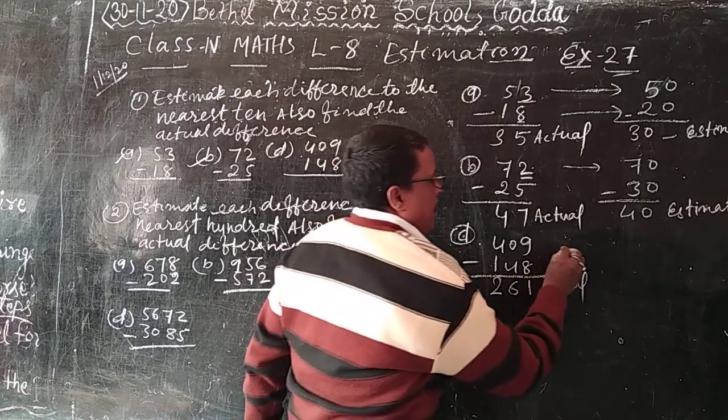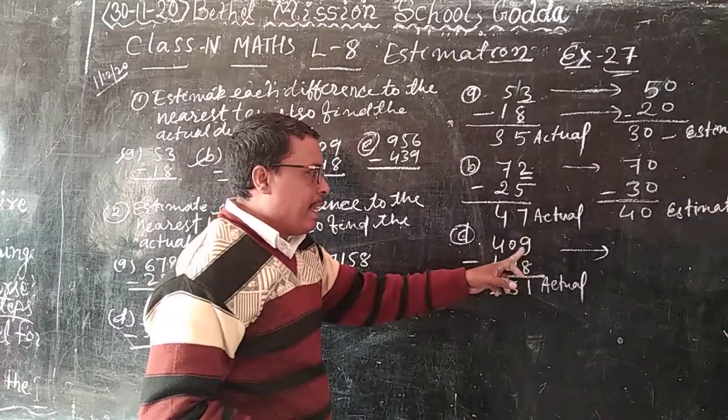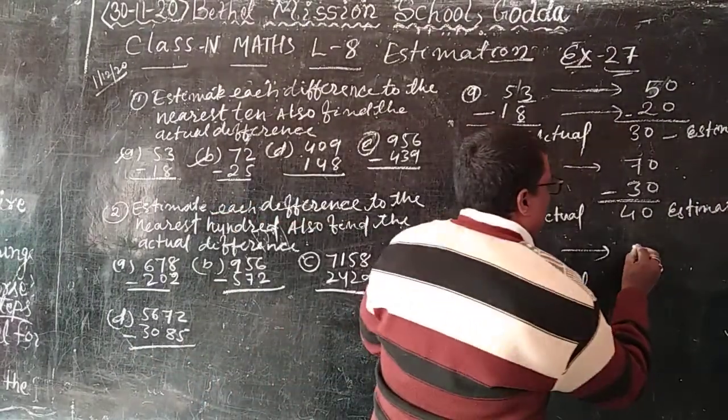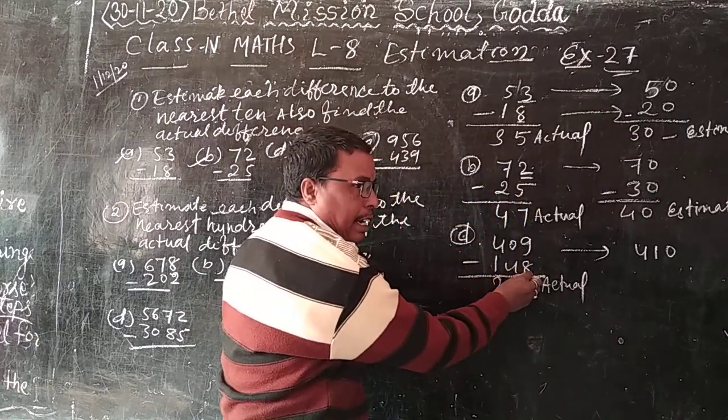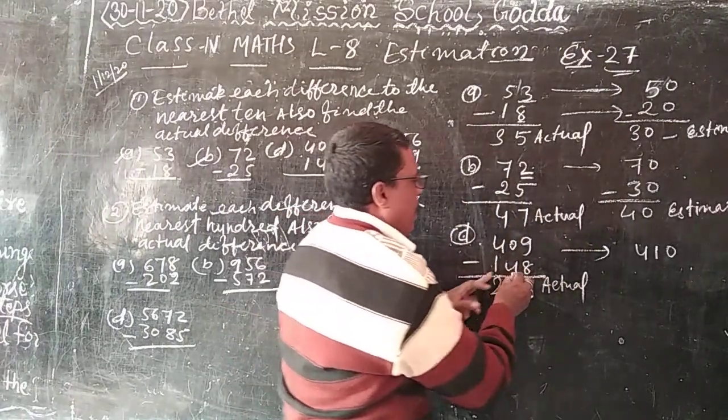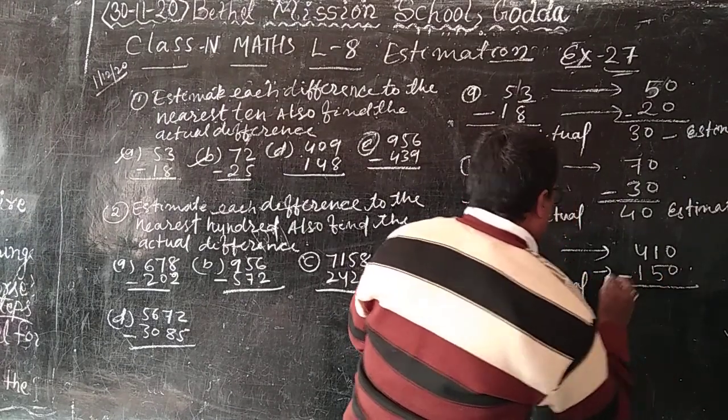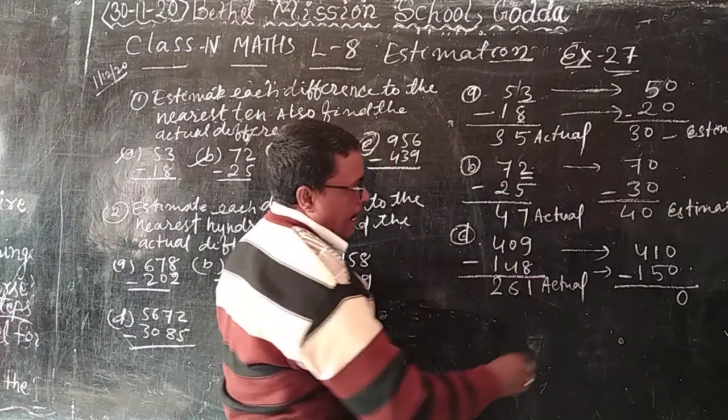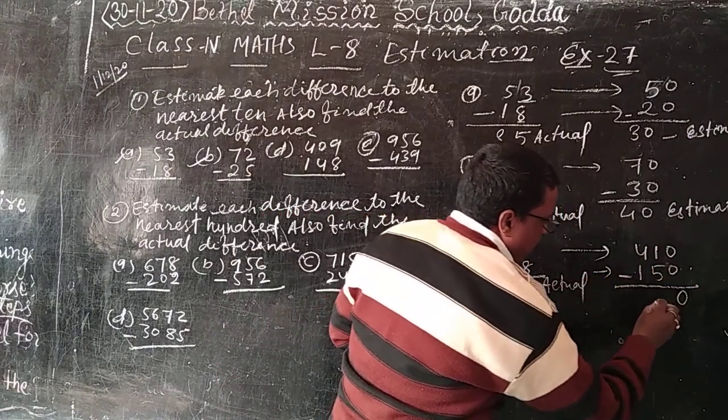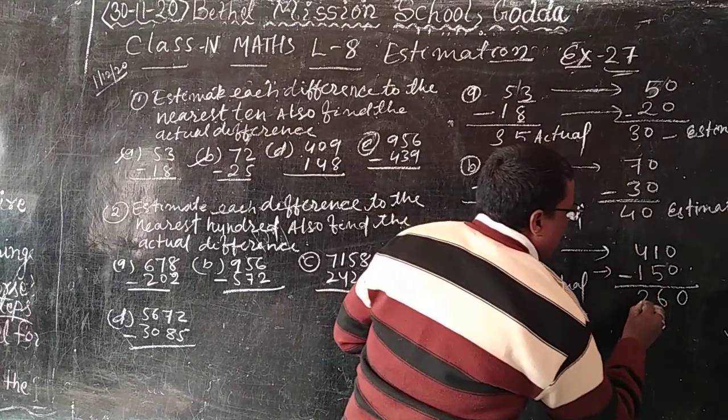And nearest 10. 9 is more than 5, that plus 1. So here 410. 8 also more than 5, so plus 1. So here 9, 150. 410 minus 150, how much? 11 minus 5, 6. And 3 minus 1, 2. 260 estimate. Clear?